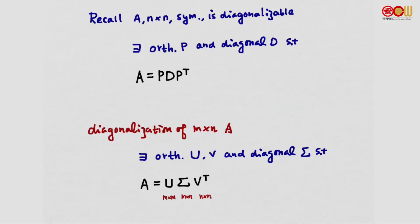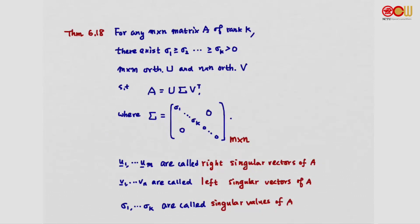It turns out we can diagonalize any m by n non-square matrix A if we allow a more general form of diagonalization. We can find orthogonal matrices U and V — U is m by m, V is n by n — and a diagonal matrix sigma, such that A equals U sigma V-transpose.